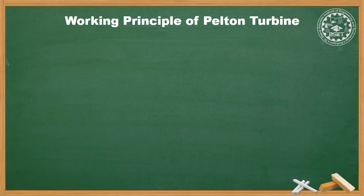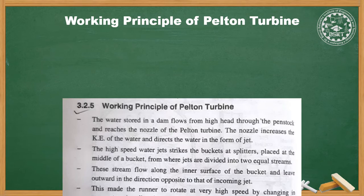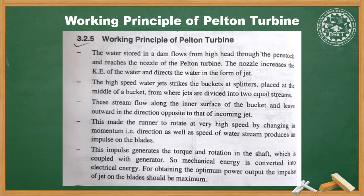The working principle of the Pelton turbine: water stored in a dam flows from high head through a penstock and reaches the nozzle. The nozzle increases the kinetic energy of water and directs it in the form of a high-speed jet. The jet strikes the bucket at the splitter, dividing into two equal streams that flow along the inner surface and leave in the direction opposite to the incoming jet. This change in momentum produces an impulse on the blade, generating torque and rotation in the shaft, which is coupled with the generator, converting mechanical energy into electrical energy.